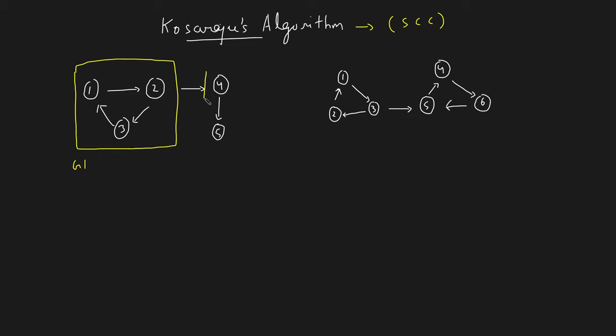Node four is a single node in a strongly connected component. Why are four and five not a single SCC? Because four can reach five but five cannot reach four. So four is one single SCC and five is another single SCC. These are the three strongly connected components in graph g1.